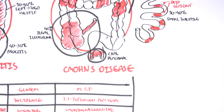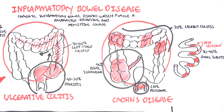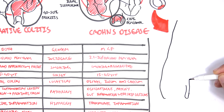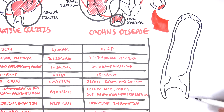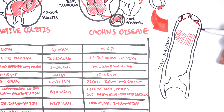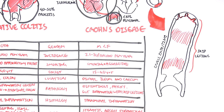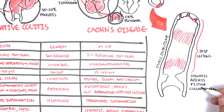Comparing ulcerative colitis to Crohn's disease: Crohn's can affect the large intestine or the small intestine. Zooming into the small intestine, we see transmural inflammation with skip lesions. Complications of Crohn's disease include stenosis, abscess formation, fistula, colon cancer, and granulomas.